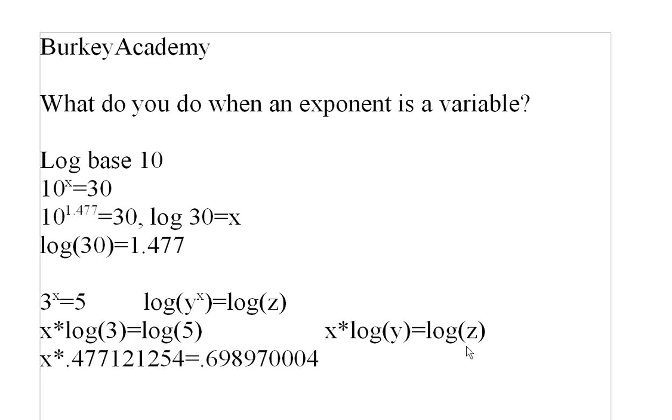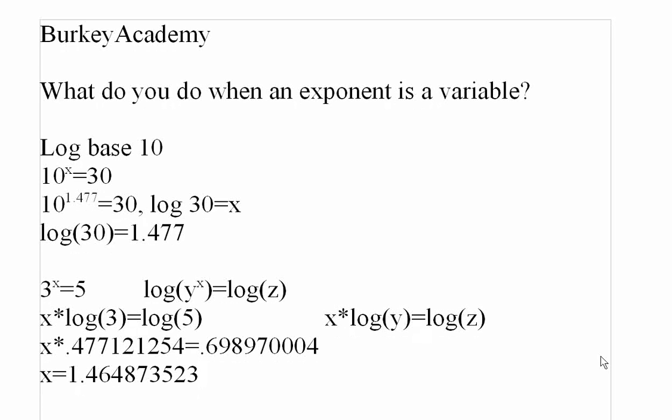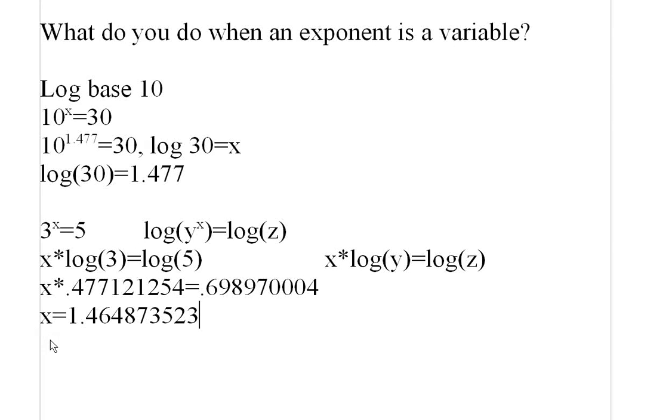Now, you have an equation that you can just solve for x. What we're going to do now is we're just going to divide both sides by the .477121254, and let's see what we get for x. We get that x is 1.464973523. Again, you probably wouldn't always use all those decimal places, but the more decimal places you use, the better off you're going to be.